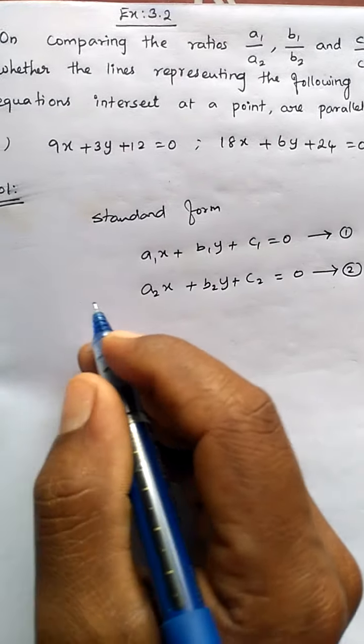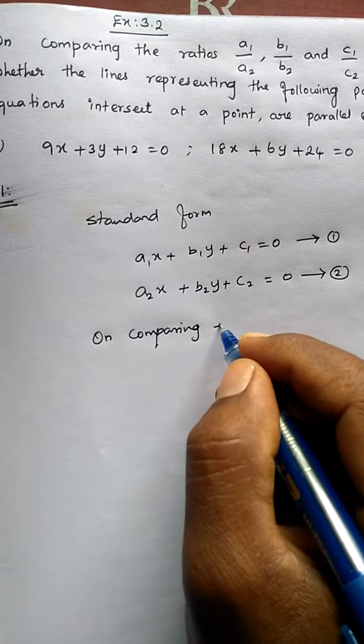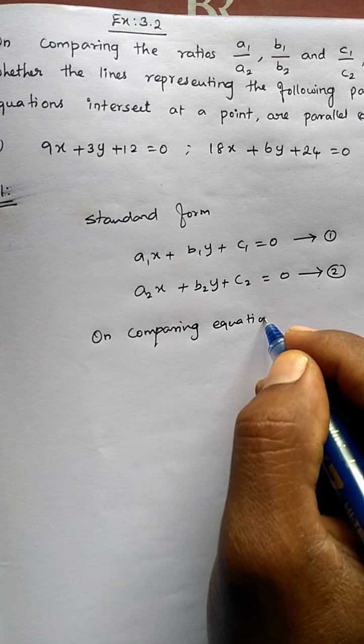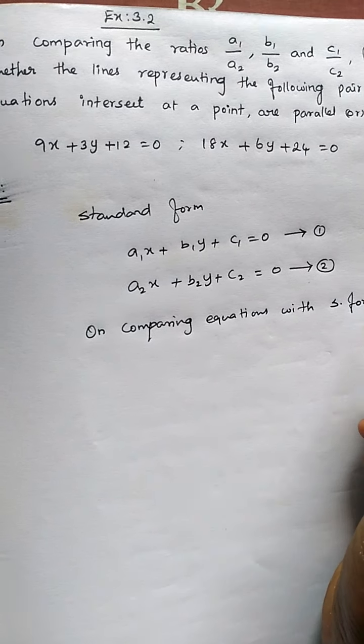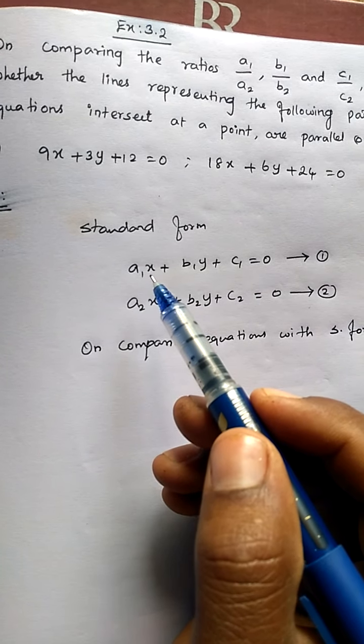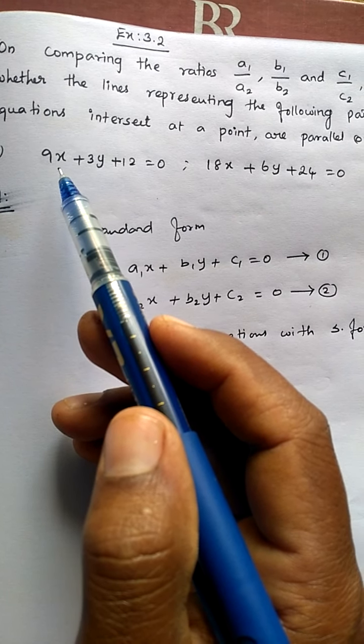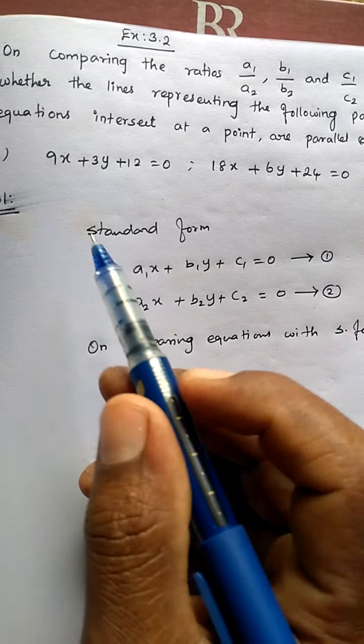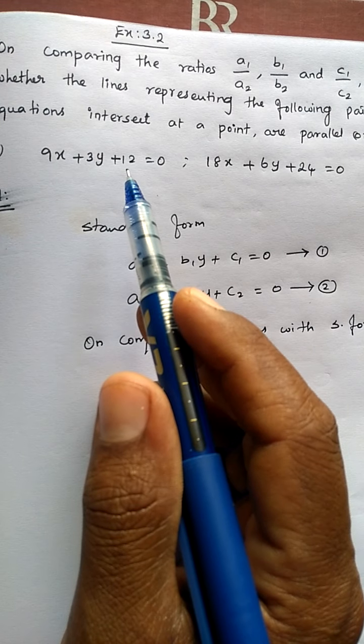Now take the given equations and compare the standard form with the given equations. On comparing the equations with standard form, you can see the coefficient of x is your a1. In the first equation, coefficient of x is 9, so a1 value will become 9, b1 value will become 3, and c1 value will become 12.